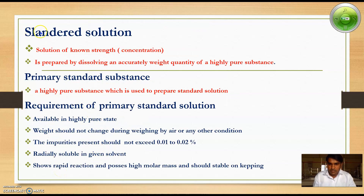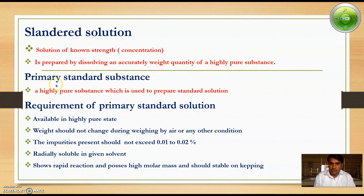The next part is standard solution. A standard solution is a solution of known strength or concentration. It is easily prepared by dissolving an accurately weighed quantity of a highly pure substance. The next term is primary standard substance: a highly pure substance which is used to prepare a standard solution is called a primary standard substance.